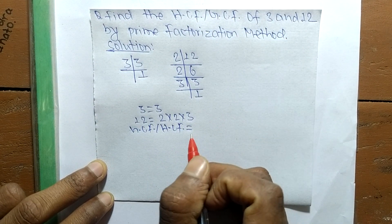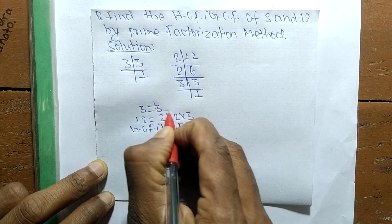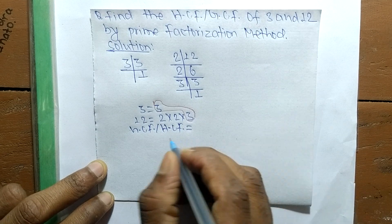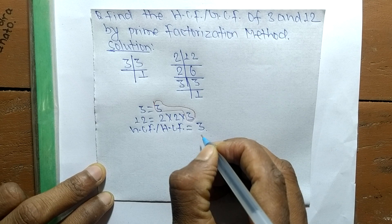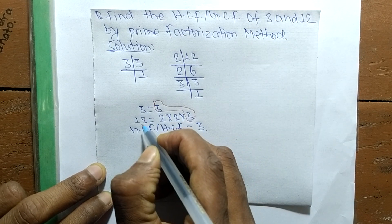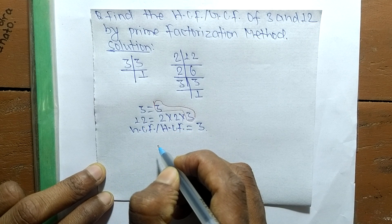The common factor here is 3, so its GCF or HCF is equal to 3. So 3 is the GCF or HCF of 3 and 12. So this much for today and thanks for watching.